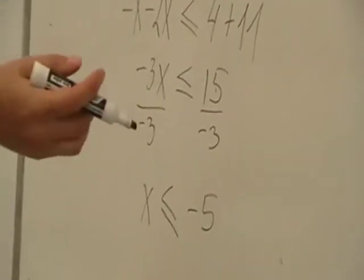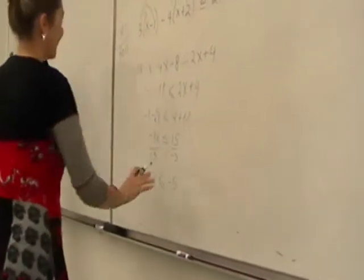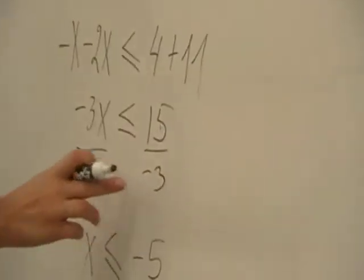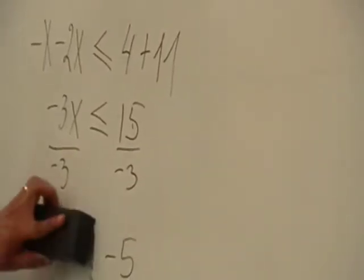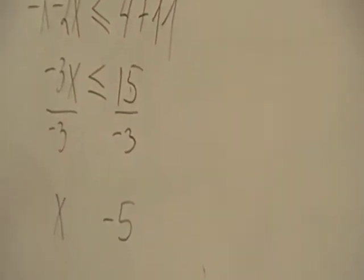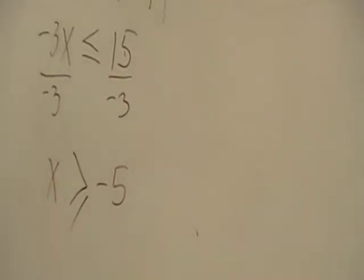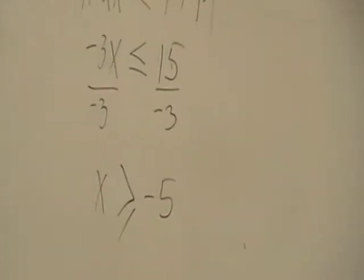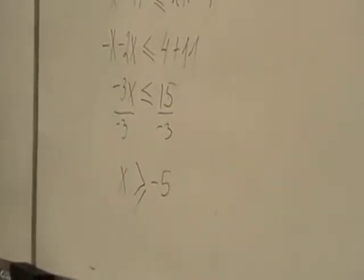Wait — we need to change the inequality symbol. Why? Because when you divide or multiply by a negative number, you have to switch, or reverse, the inequality. So less than or equal becomes greater than or equal. The correct answer is x greater than or equal to negative 5.